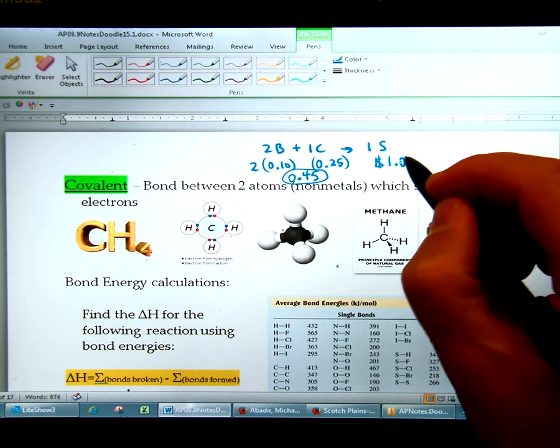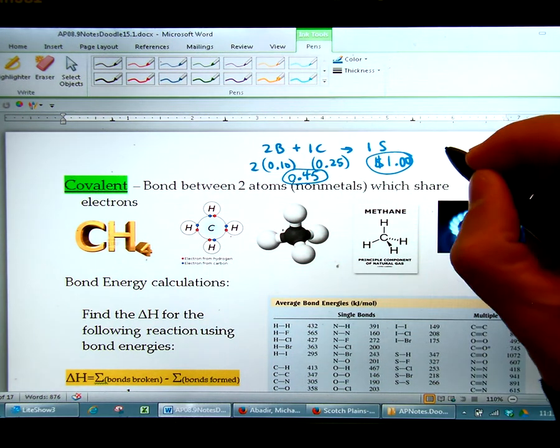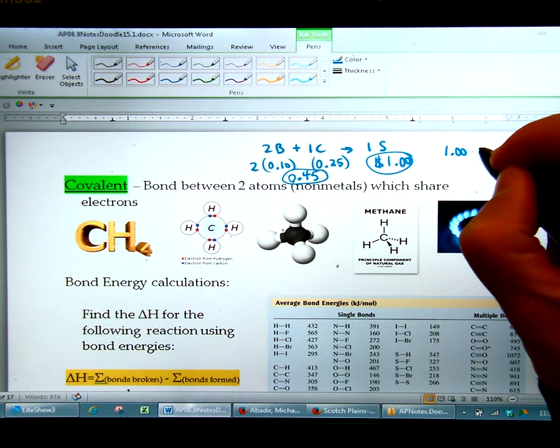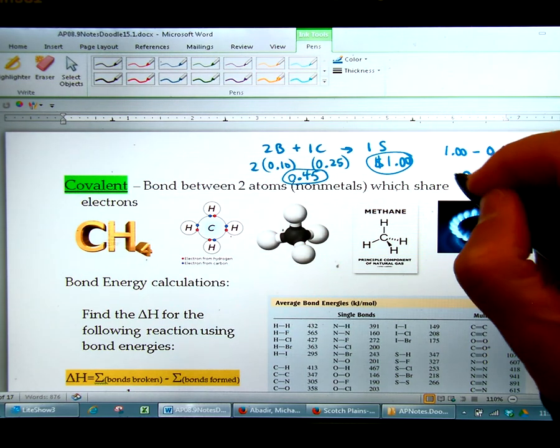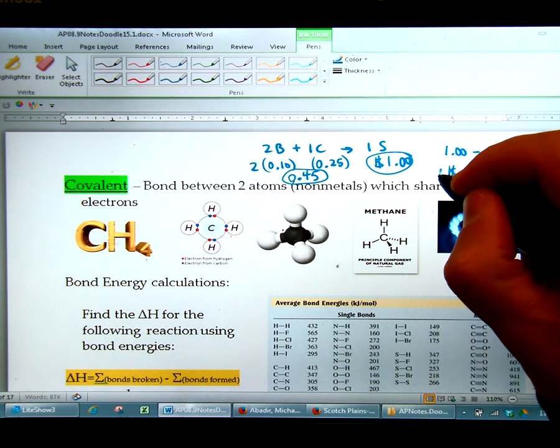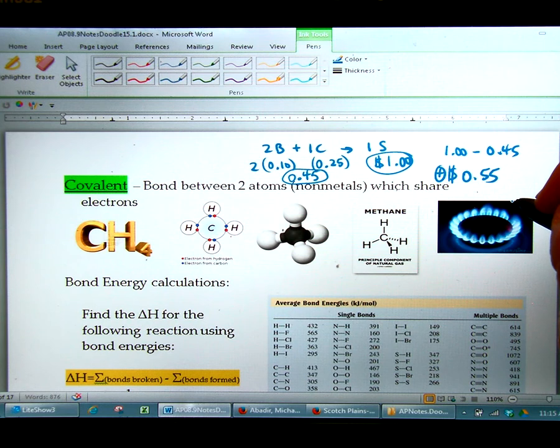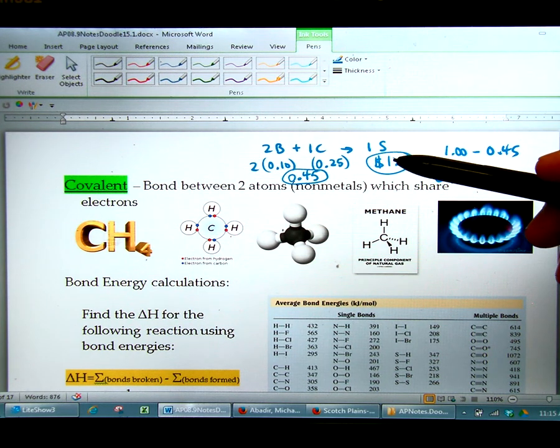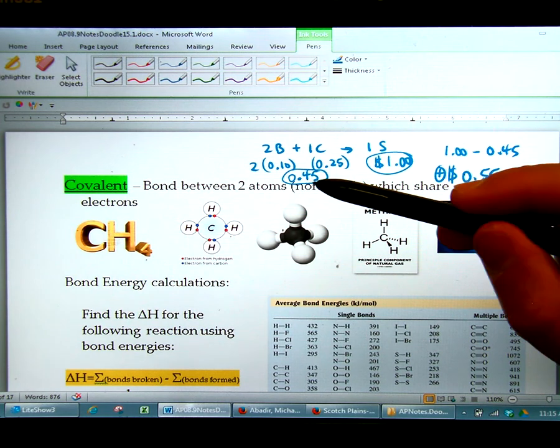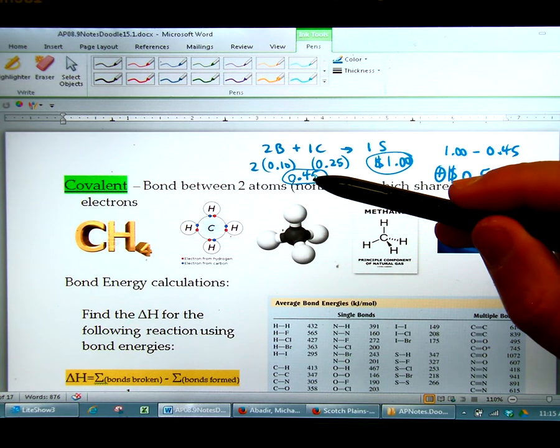But 45 cents. So it costs us 45 cents but we're selling it for a dollar. So you would do one dollar minus 45 cents. And that's going to give you positive 55 cents. Positive. That means we're making money. We're taking in money. And that's because the products have more stored energy than the reactants. The products have more stored energy than the reactants.